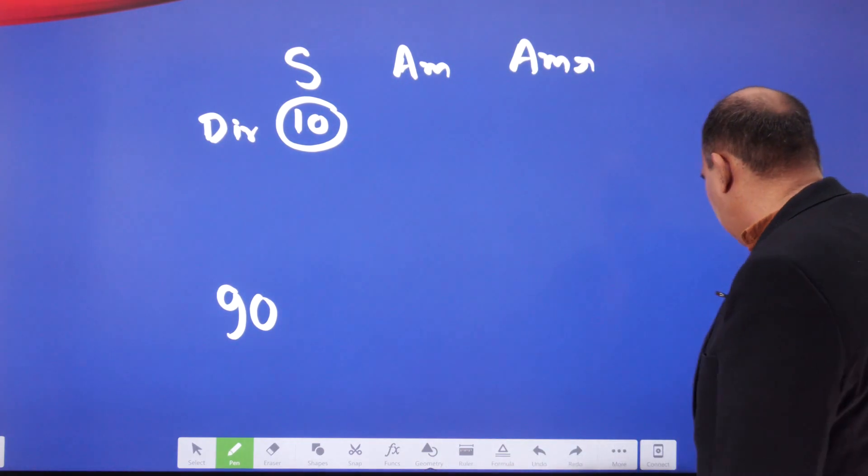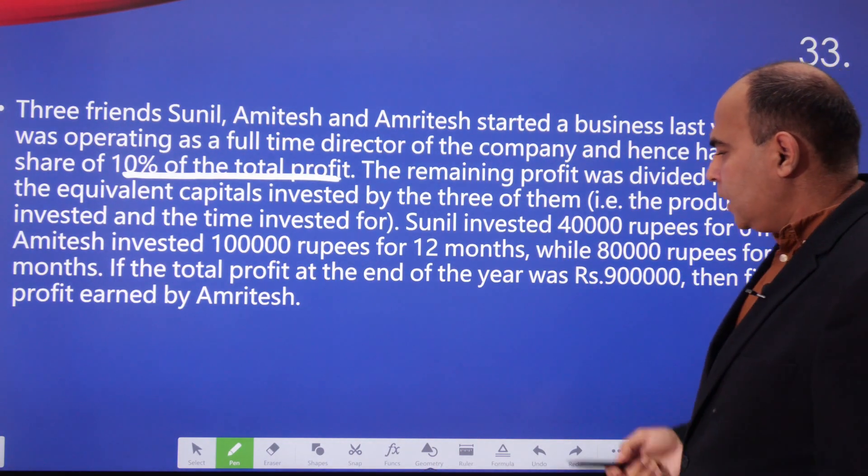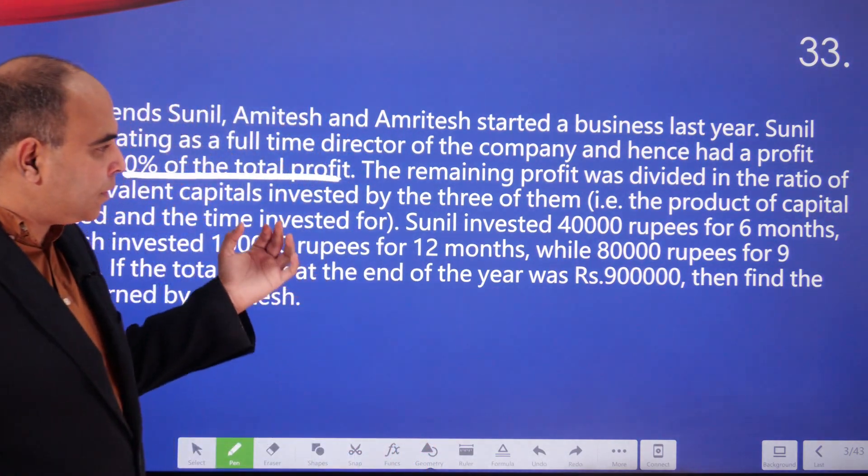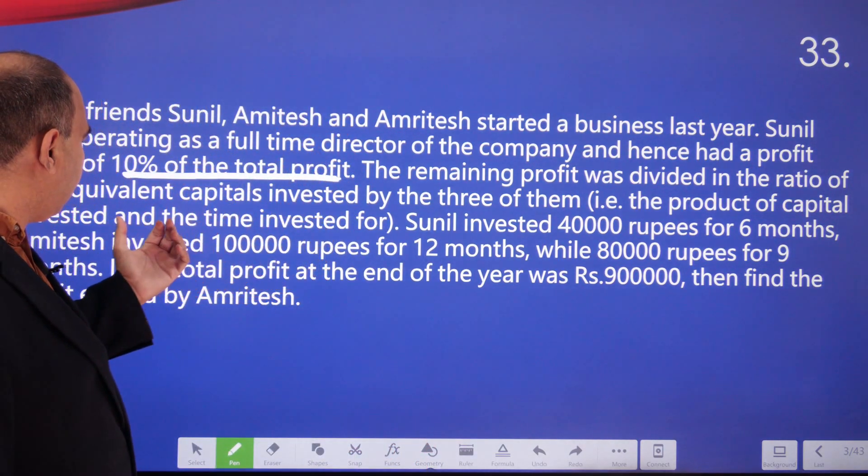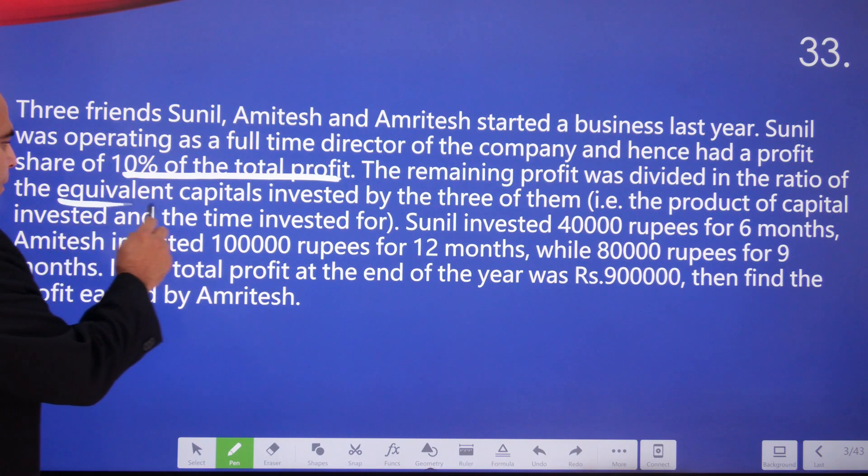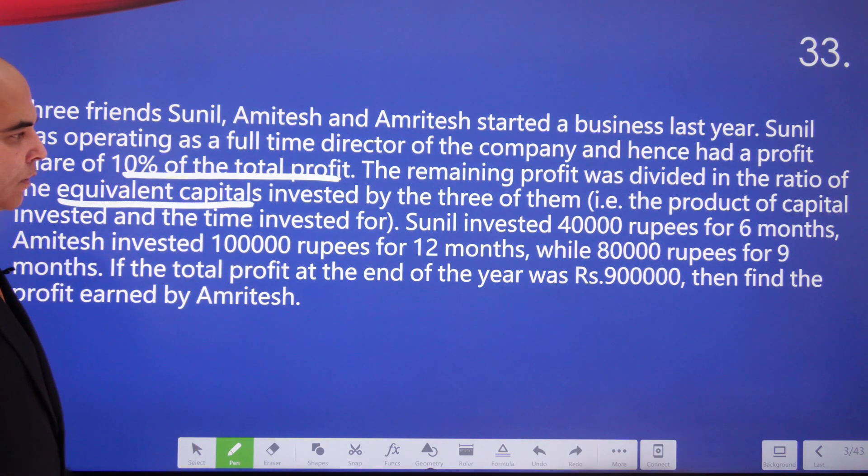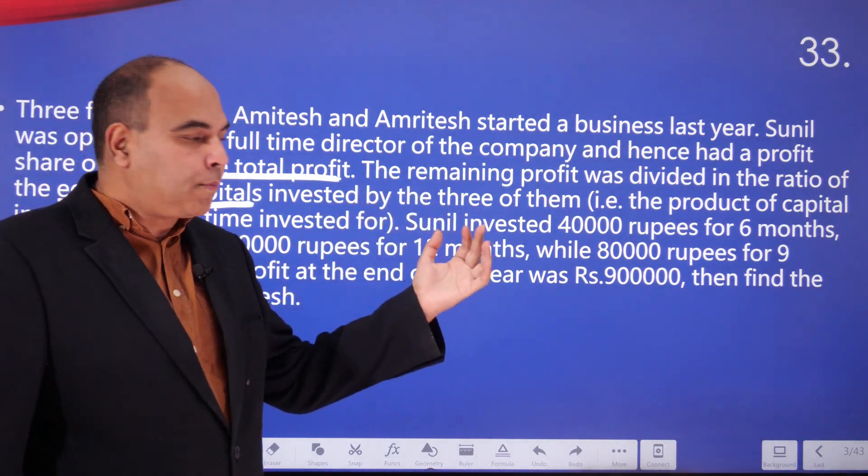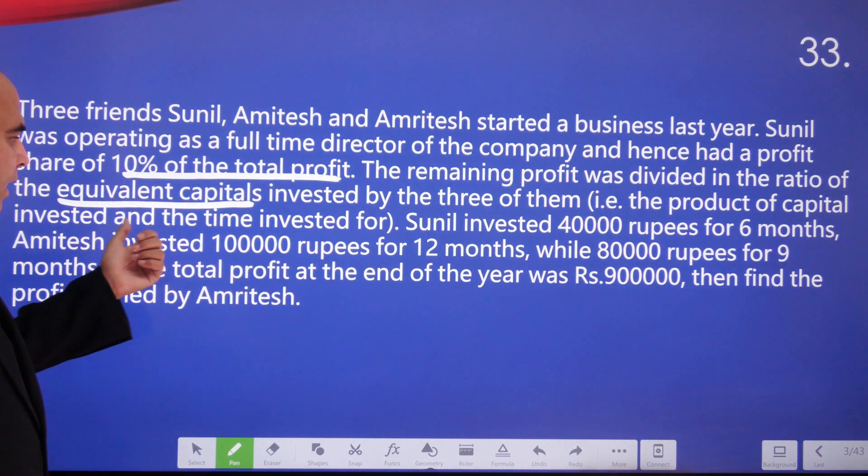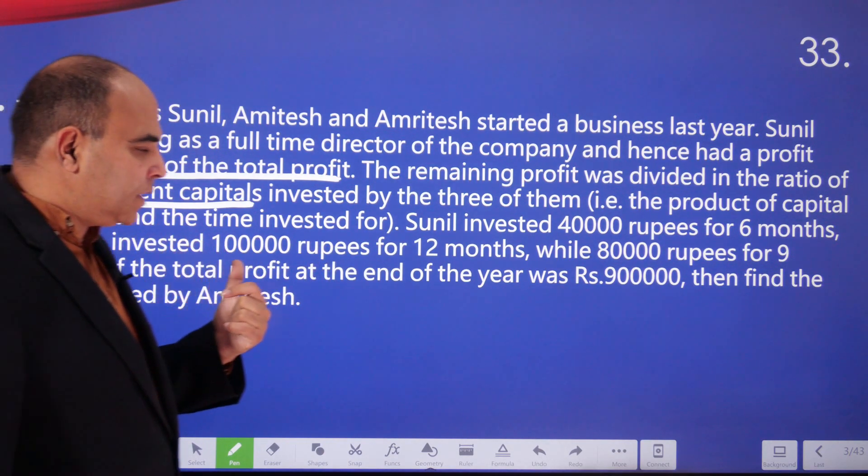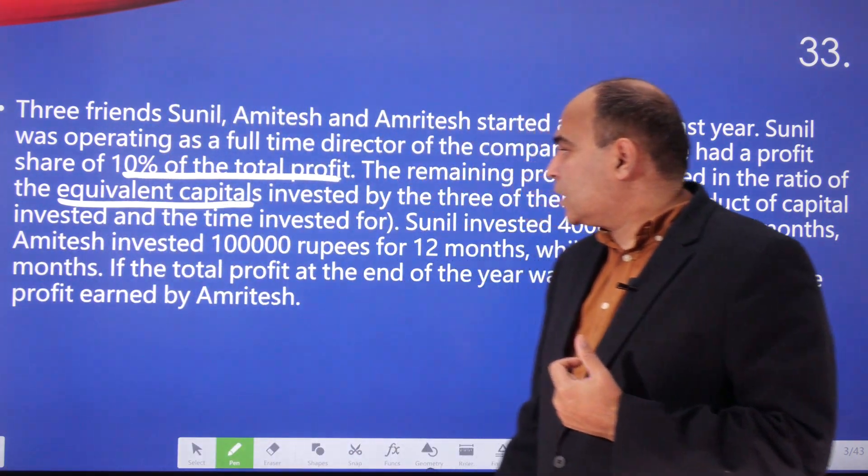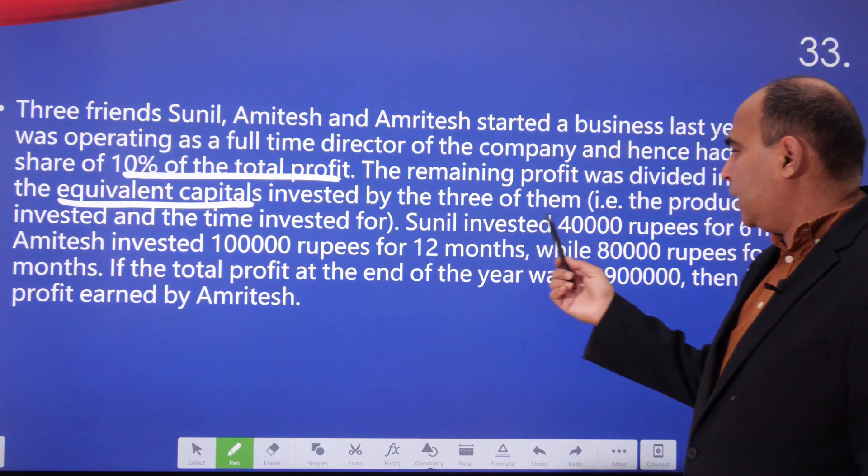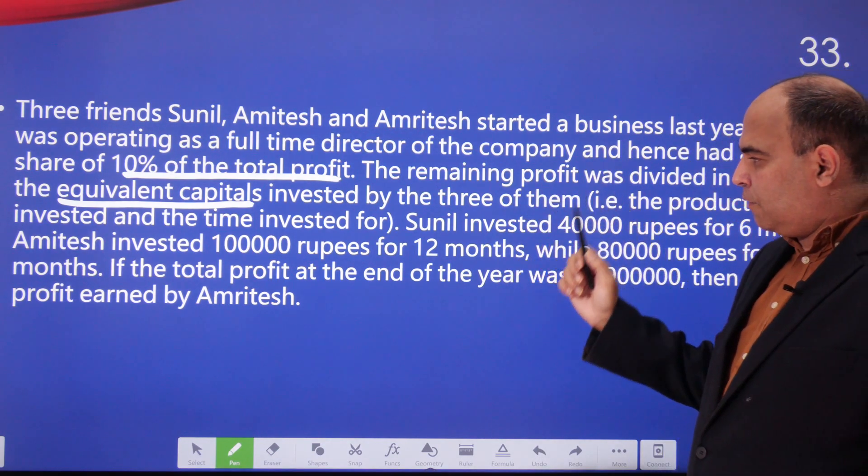The remaining profit is divided in the ratio of the equivalent capitals invested by the three of them - that is, the product of capital invested into the time invested. That means the remaining profit, which is 90, is getting divided amongst the three of them in the ratio of the equivalent capital invested.